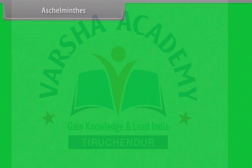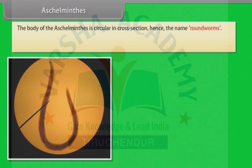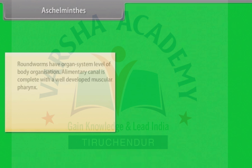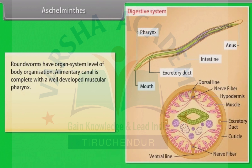The body of Aschelminthes is circular in cross-section, hence the name roundworms. Aschelminthes may be free-living, aquatic and terrestrial, or parasitic in plants and animals. Aschelminthes are bilaterally symmetrical, triploblastic and pseudocoelomate animals. Roundworms have organ system level of body organization.